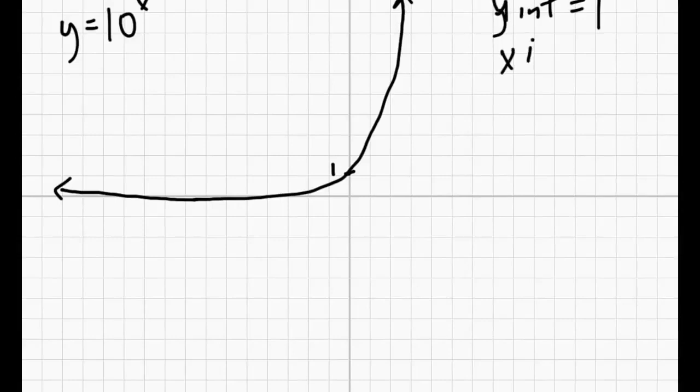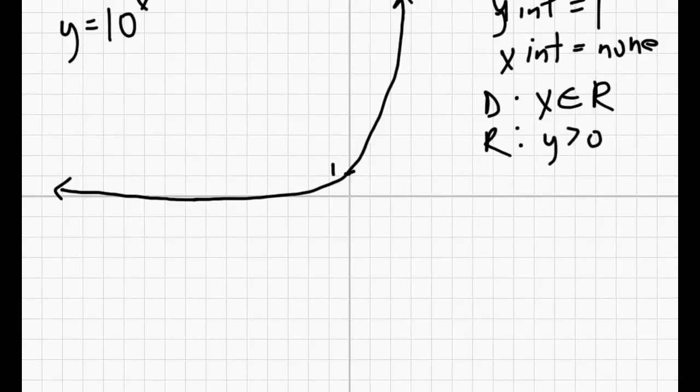So that's our y-intercept, it's at 1, we have no x-intercepts. The graph just follows the x-axis. And we know that the domain was any real number for x, and our range was greater than 0, so y is greater than 0. And then we know that it went from quadrant 2 to quadrant 1, and that was it.